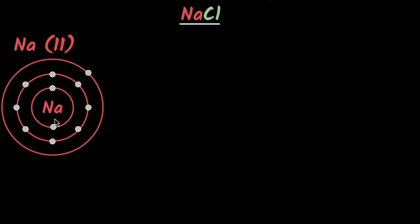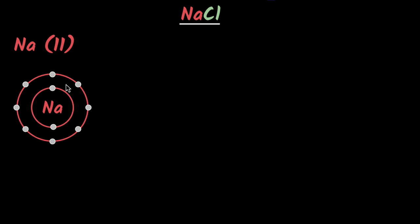As sodium, how could we achieve octet? One way is to get seven more electrons so that the third shell also has eight electrons — but that's so hard. Instead, we would want to just lose that one electron, because if we lost that one electron, we would have octet and we would be stable.